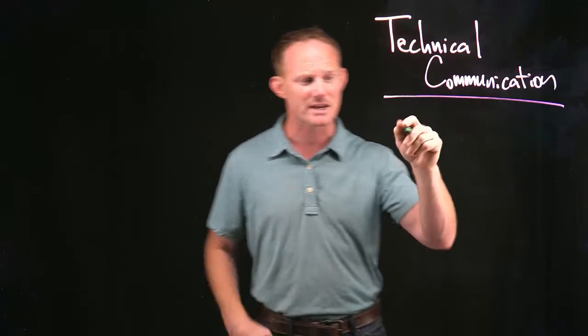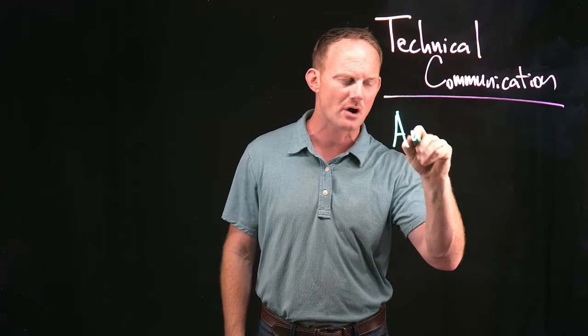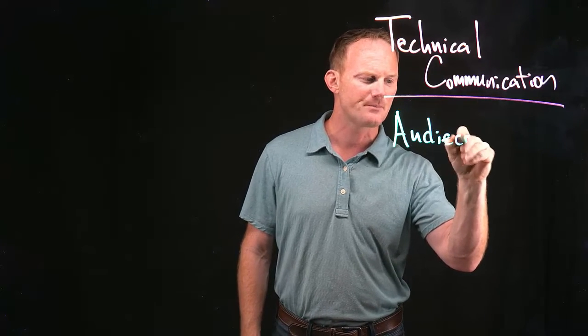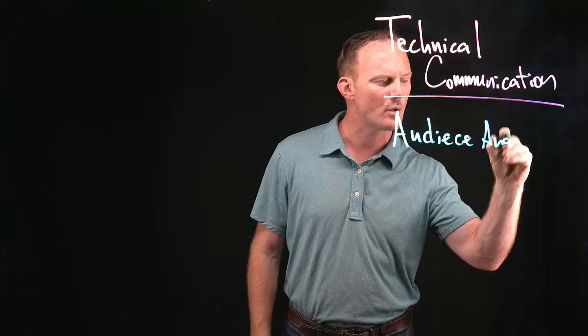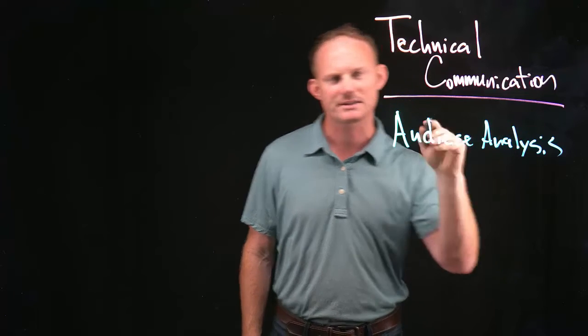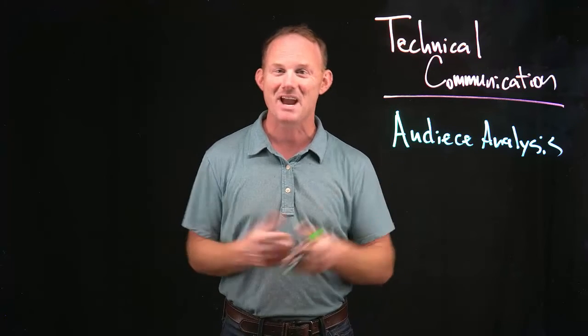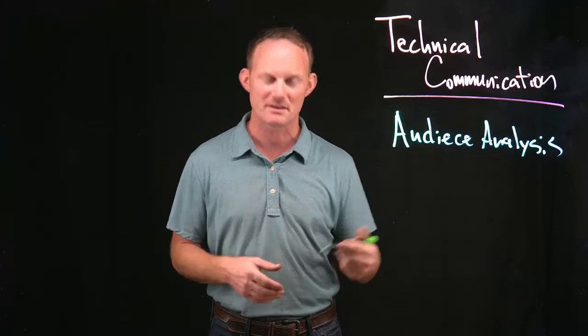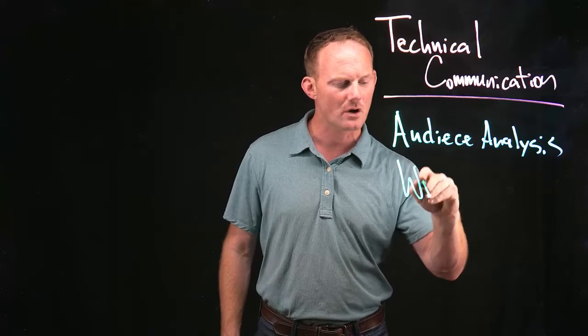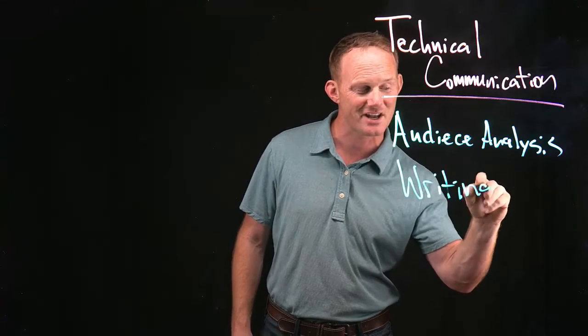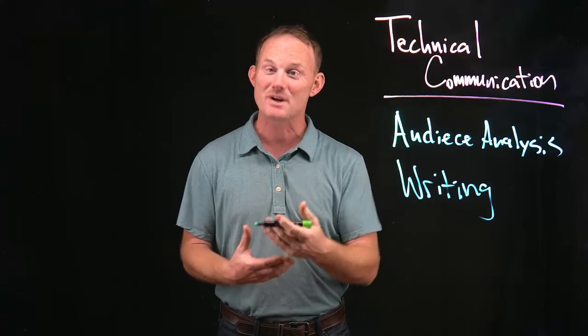So the way the course is organized is we are going to start off by talking about audience analysis. Everything is going to flow out of this topic, because until you've identified where the person is out on the spectrum, you can't really make good decisions about any of the other stuff. We will also talk about writing—things that endure, like emails, presentations, etc.